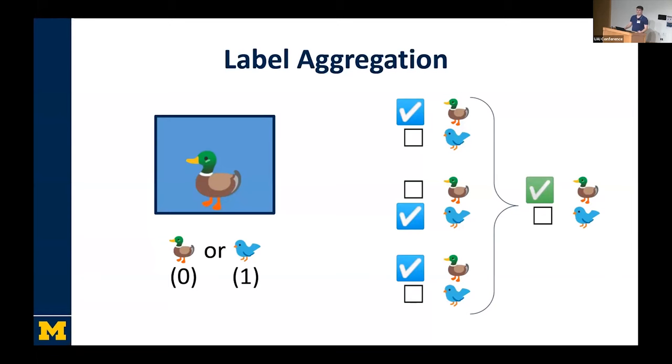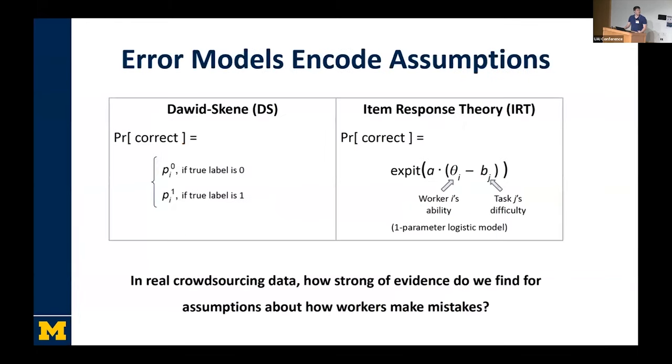For this task, there's a powerful baseline, which is just taking the majority vote of the workers, the labels they provide. But since people have started to do this in practice, they've proposed many, many algorithms to try to outperform the majority vote. And the way these algorithms generally work is by assuming some underlying model about how workers make errors in labeling and then leveraging that model in a clever way to have a more sophisticated algorithm. The error models that underlie these algorithms generally come from one of these two families, which describe the probability that a worker will respond correctly and sort of delineate what goes into that probability. And different models imply different assumptions about the way that workers make mistakes.